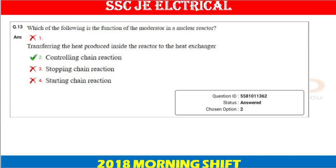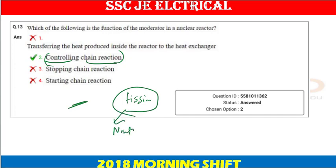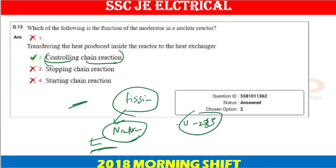Next question: which of the following is the function of a moderator in a nuclear reactor? The function of the moderator is to control the chain reaction. It does this by slowing down the neutrons produced during fission. When neutrons are slowed down, they can more effectively react with Uranium-235, increasing the probability of reaction and thus maintaining or controlling the chain reaction.